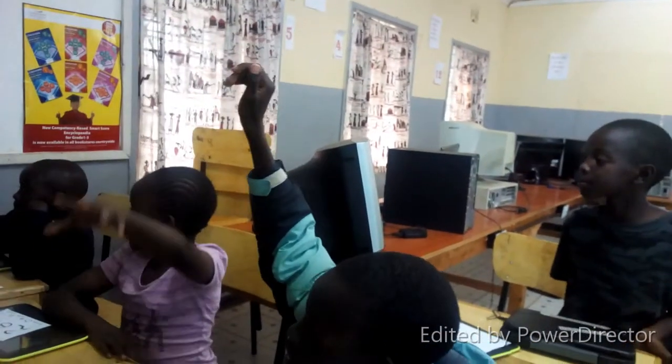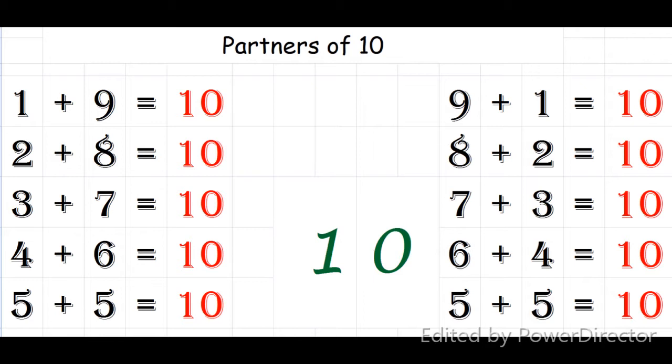9 and 1, so 9 and 1 gives us 10. Alpha: 4 plus 6 gives us 10. 4 plus 6 gives us 10.